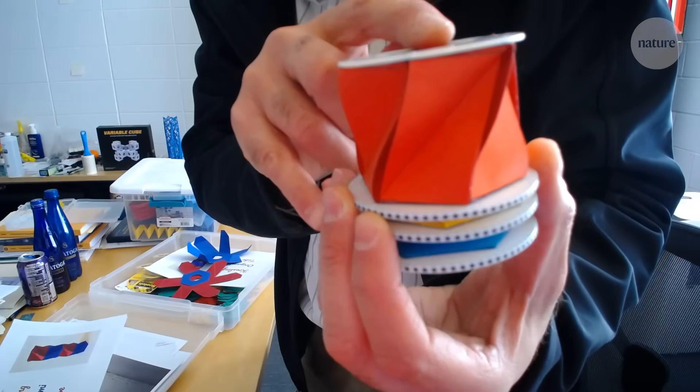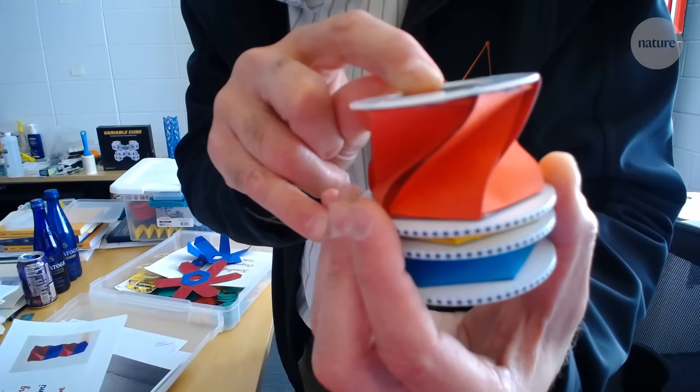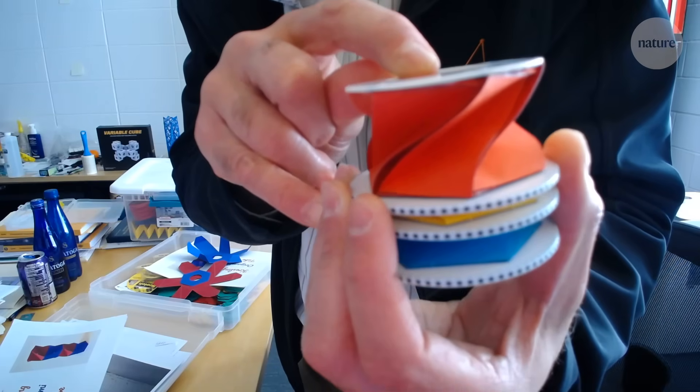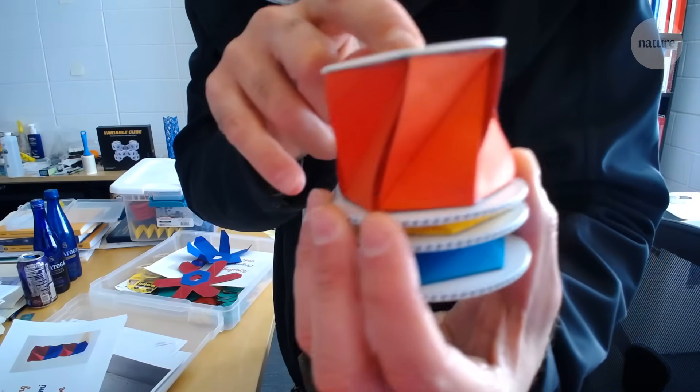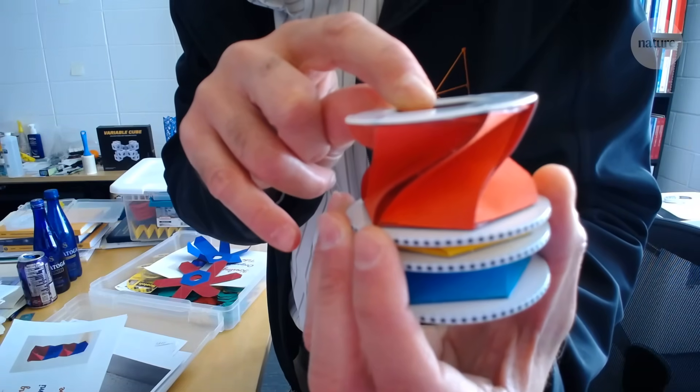When I deform, can you see that this is deforming? This looks like an S. If this was not deforming, it would be straight, like this. You see? Using non-rigid origami is key for this new metamaterial.